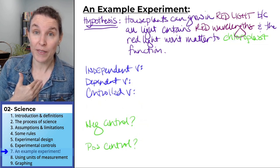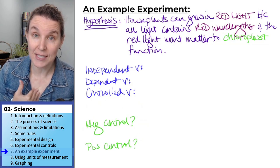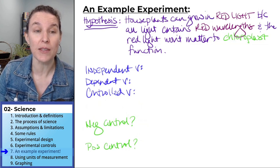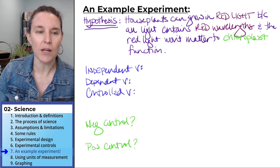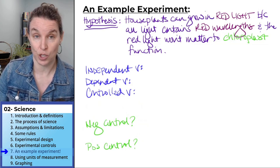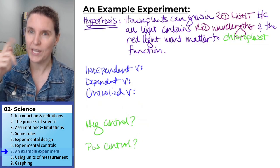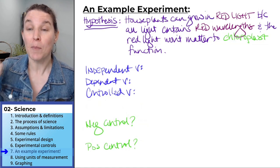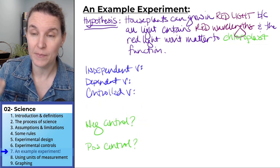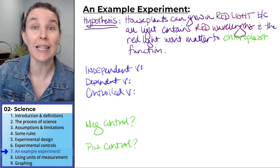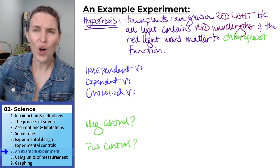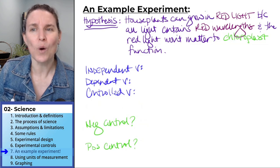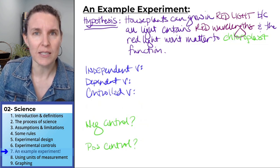So I came up with the hypothesis, and I want to look at what we expect about a hypothesis. Like how do we know what makes a good hypothesis? We've talked about it a jillion times. So let's check ourselves to see if this is a good hypothesis. My hypothesis is houseplants can grow in red light because all light contains red wavelengths, and so the red light won't matter to chloroplast function.